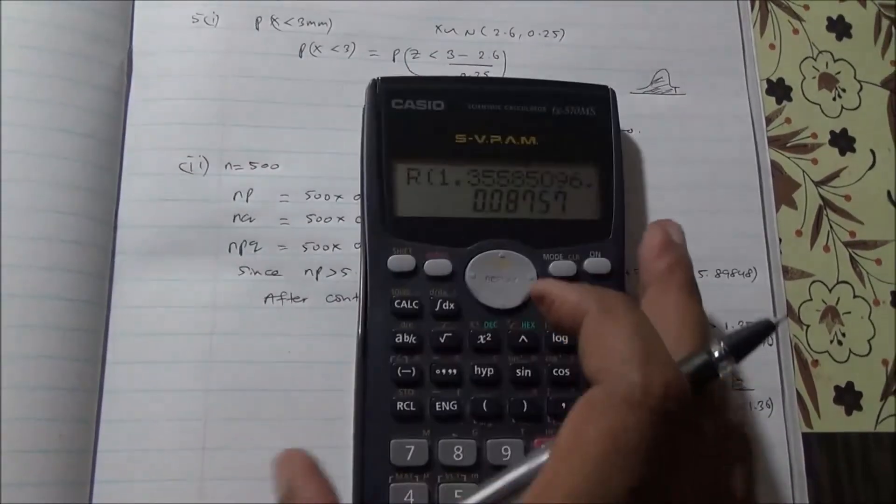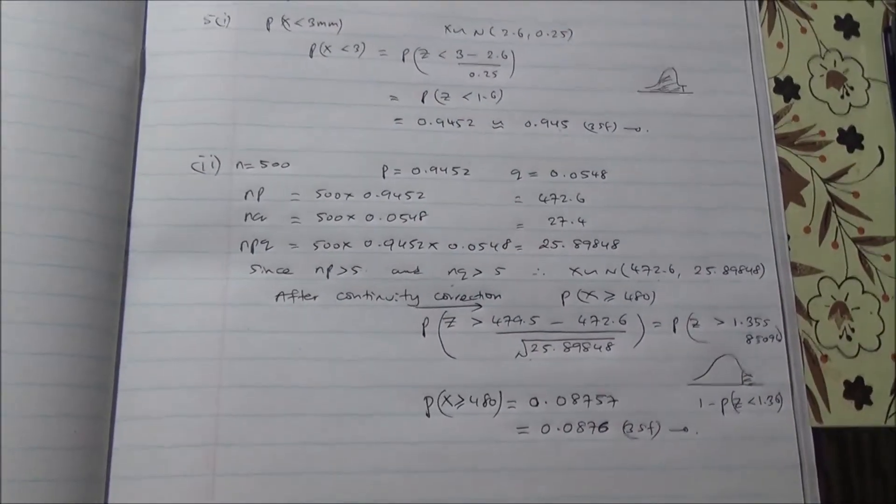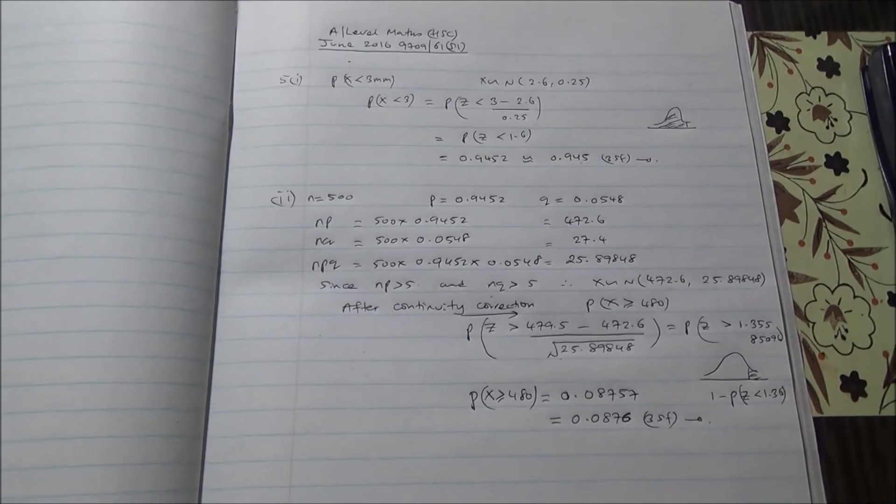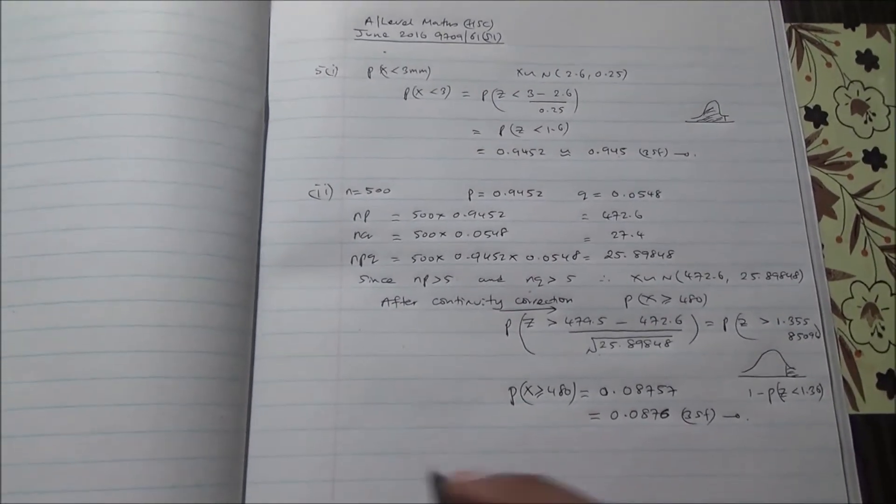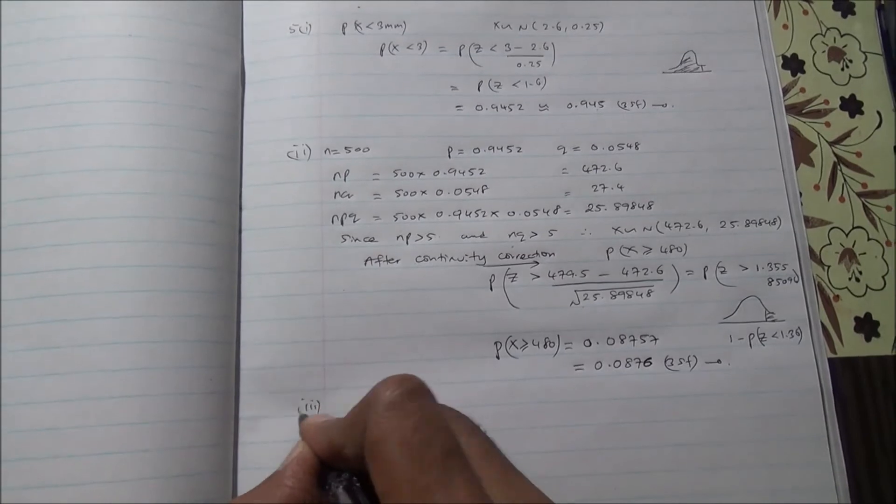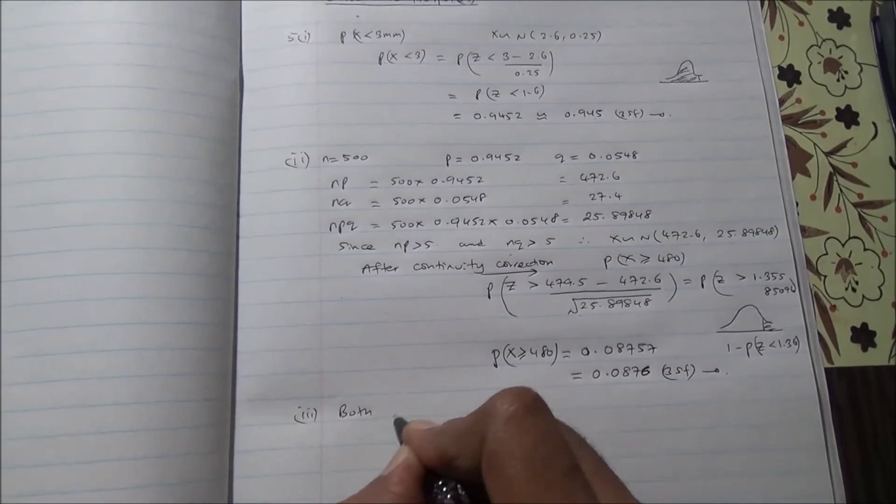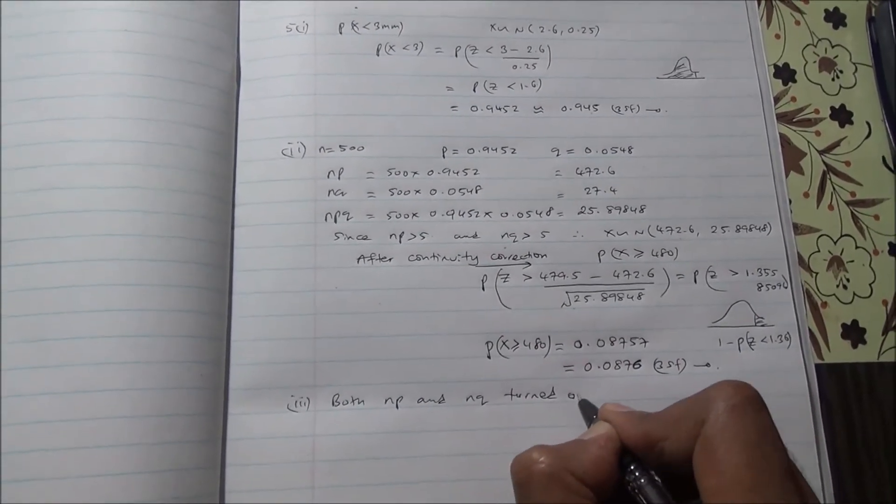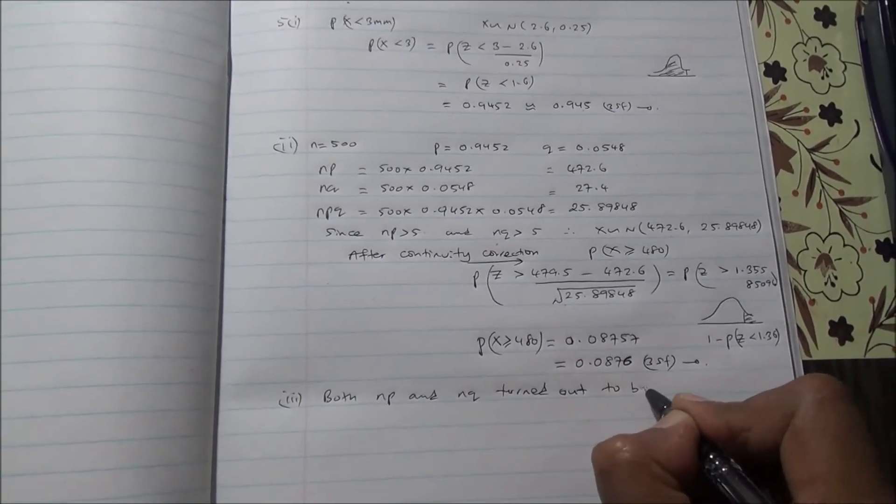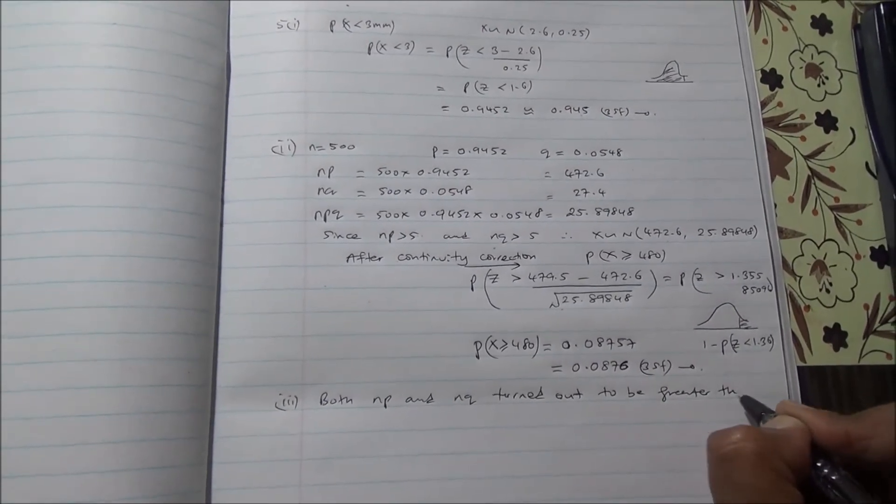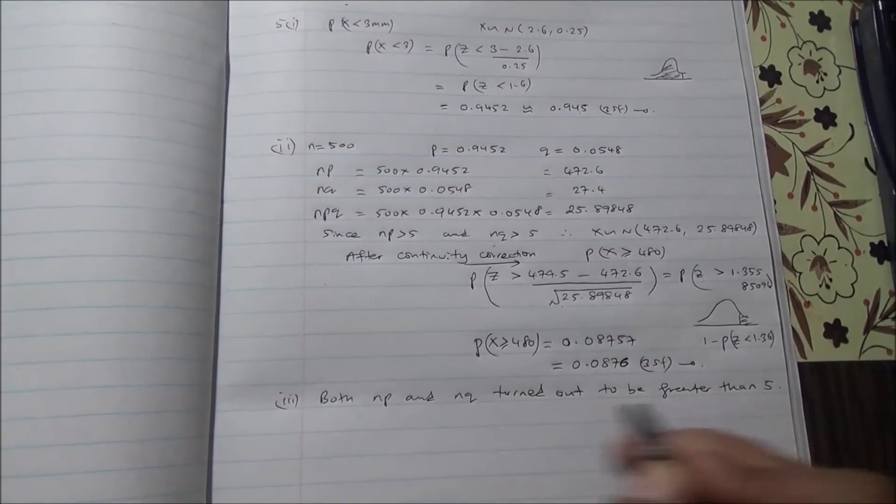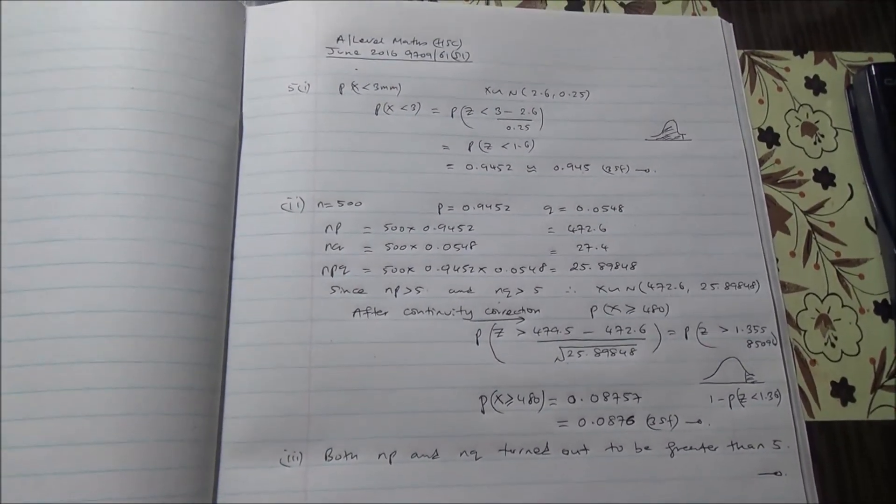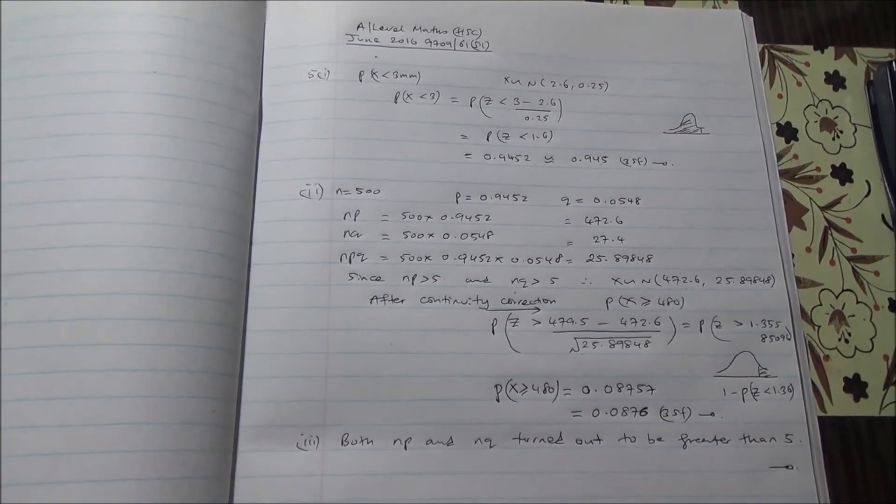For the third part, we need to justify our use of the approximation. Now, both NP and NQ turned out to be greater than 5. This is our justification of approximation to normal distribution. Take care, bye.